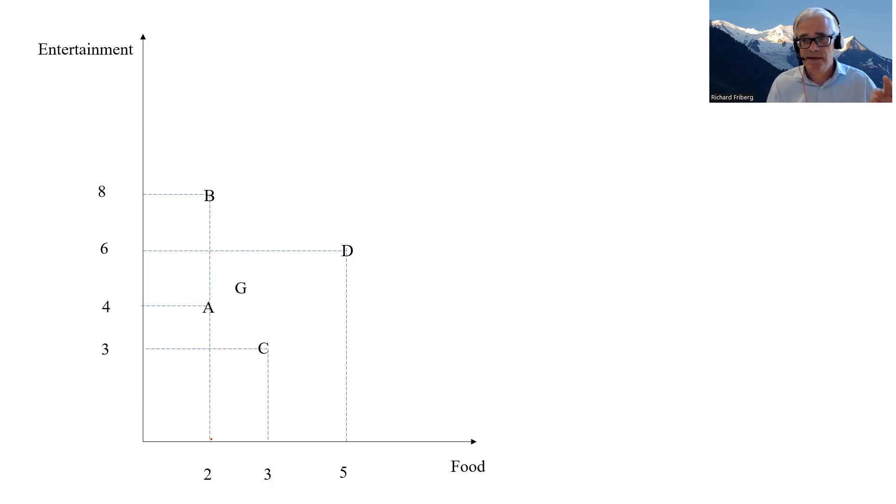So we've made some assumptions on preferences. We've said that they are complete, which means in this case we're able to rank all bundles, right? We can say if bundle A is better than bundle B, the consumer is indifferent between A and B, or if bundle B is better than bundle A. Okay, preferences are complete, we can rank them all.